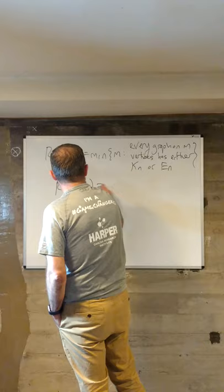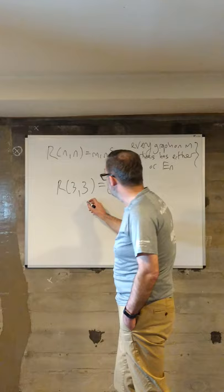So the six people at a party puzzle is the statement that r(3,3) is equal to six. Remember the proof of that.